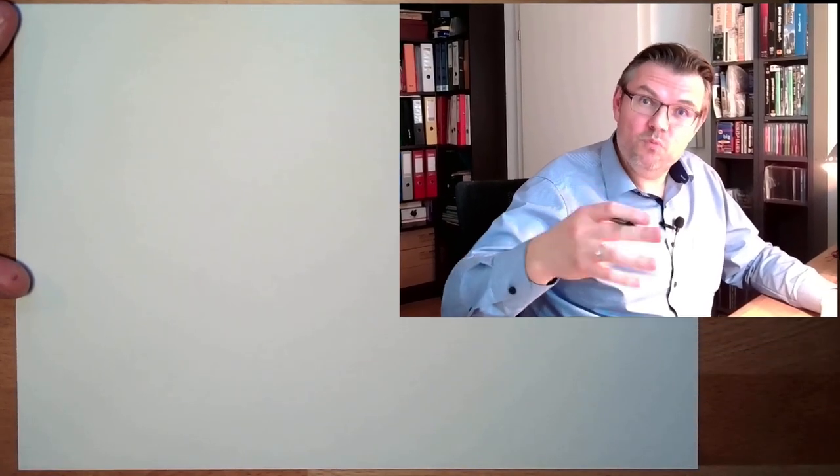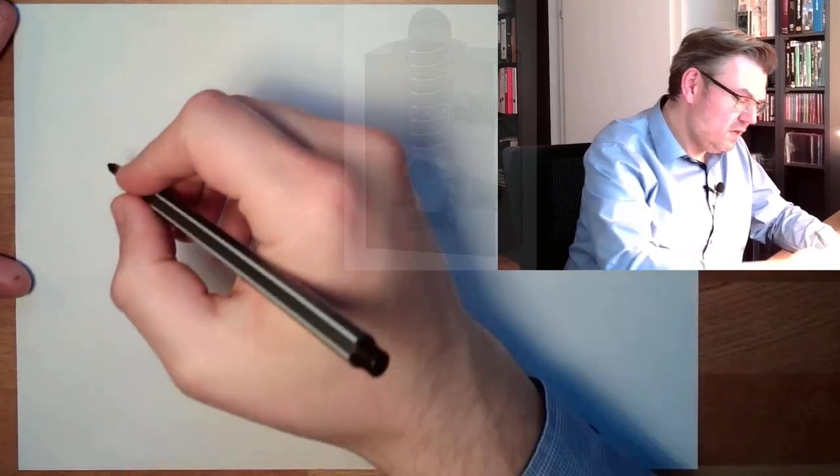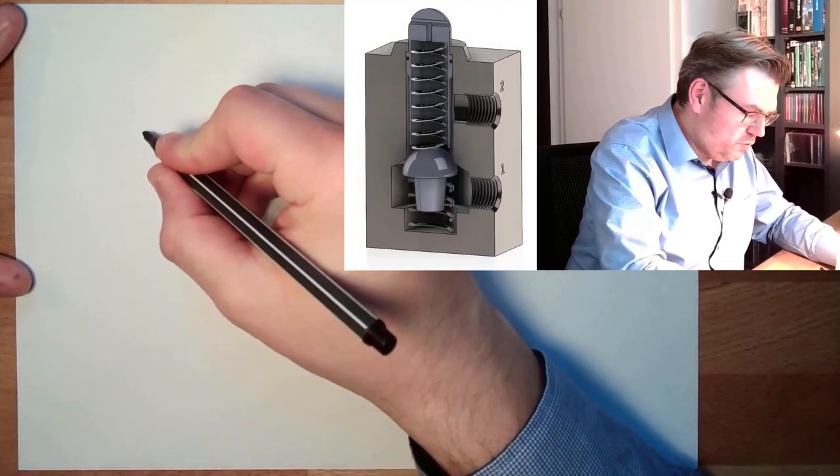This is one possible construction. Now how would the symbol of this look like? The symbol of this would look like this. We know it's a 3-2 way valve. So we have two positions, two switching positions. So I will simply draw those two positions now.